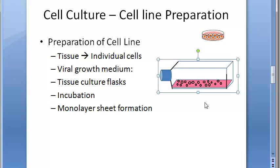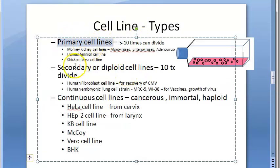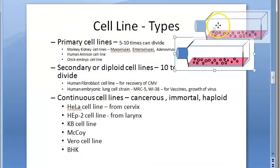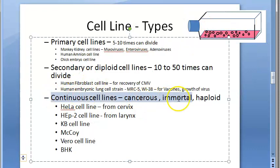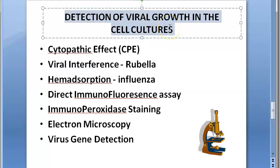The cell line contains no virus yet; then you add the specimen to culture the virus. There are many types of cell lines: primary, secondary or diploid, and continuous cell lines which are cancerous immortal cells. Examples include HeLa, Hep-2, McCoy, Vero (monkey kidney cell line used for rabies vaccine), and BHK (baby hamster kidney) cell line.